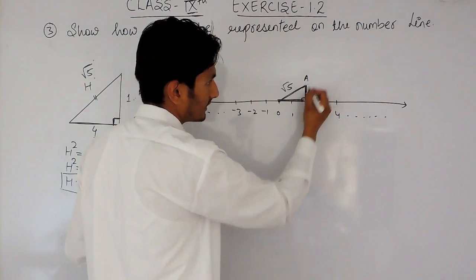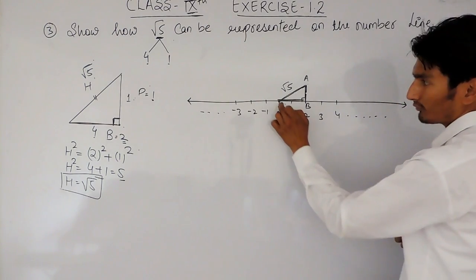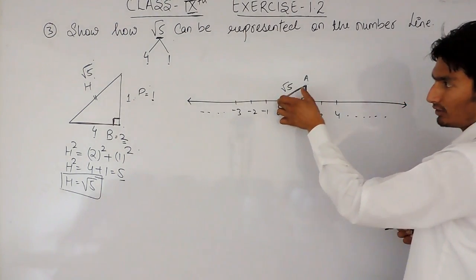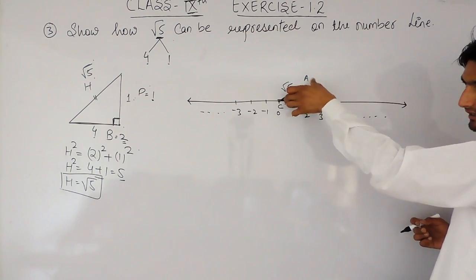you have to put the compass here and taking this length, if I name this ABC, now if I name this ABC, you have to put a compass here and taking CA as a radius, you have to draw an arc here.